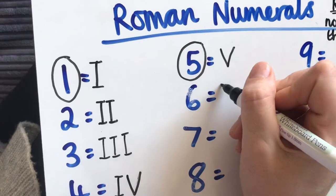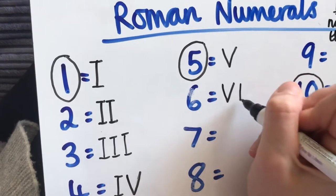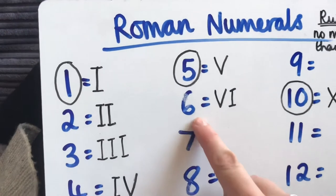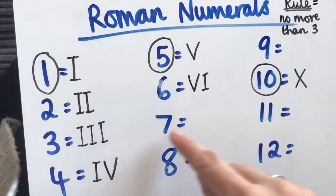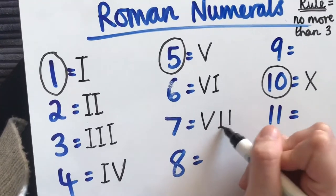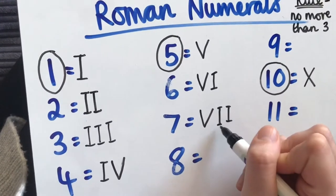If the I comes after the V it means you're adding. So 5 add 1. So that's going to be the number 6. The number 7 is going to be V-I-I. Five, six, seven.